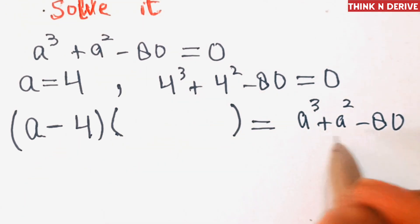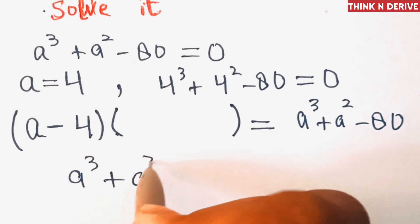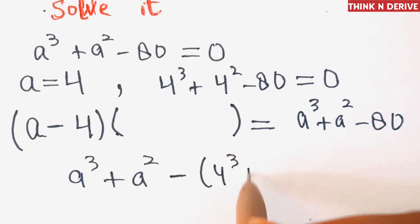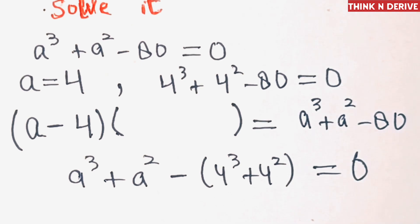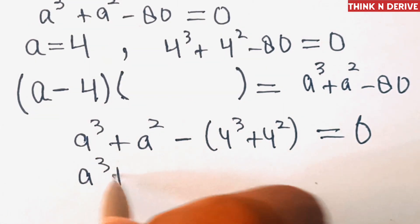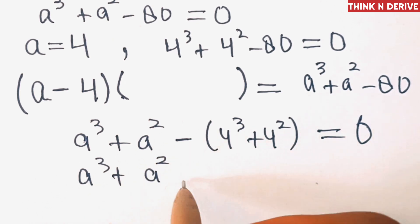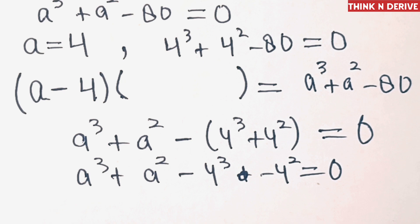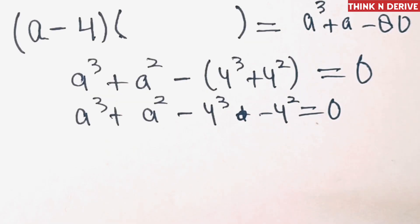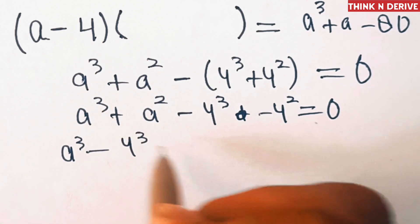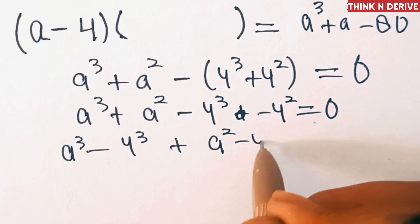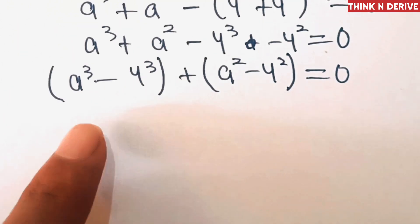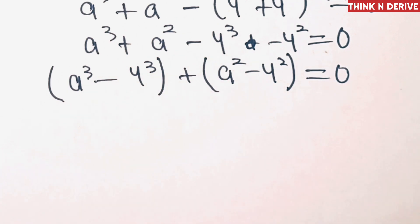We can write a³ + a² − 80 by substituting 80 as 4³ + 4² = 80, so the expression becomes a³ + a² − 4³ − 4² = 0. Now we rearrange the terms: a³ − 4³ + a² − 4² = 0.